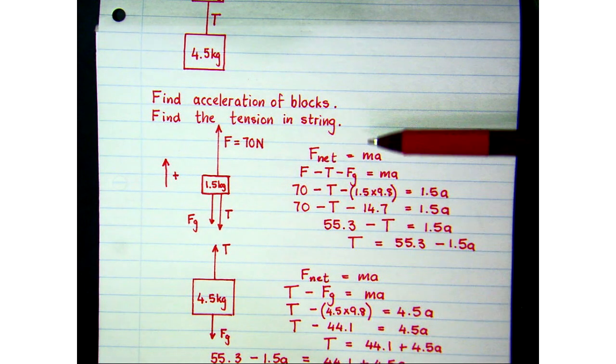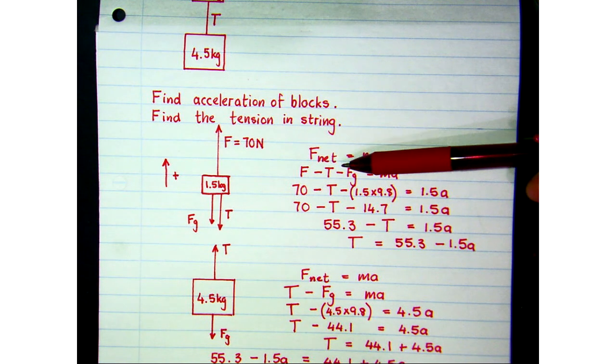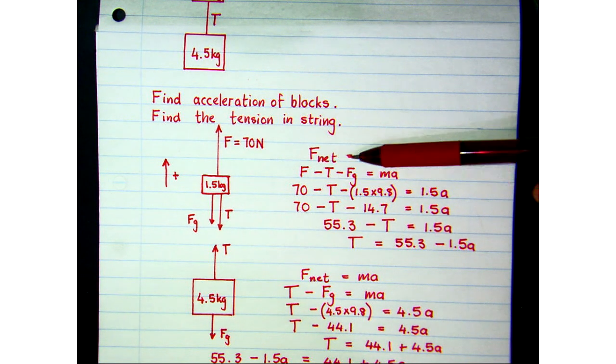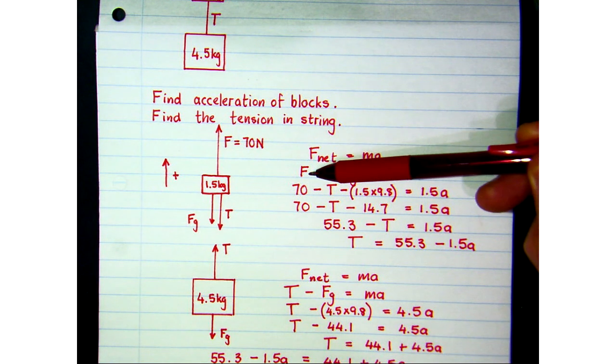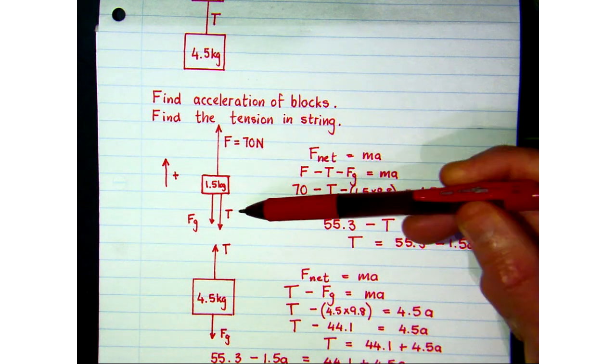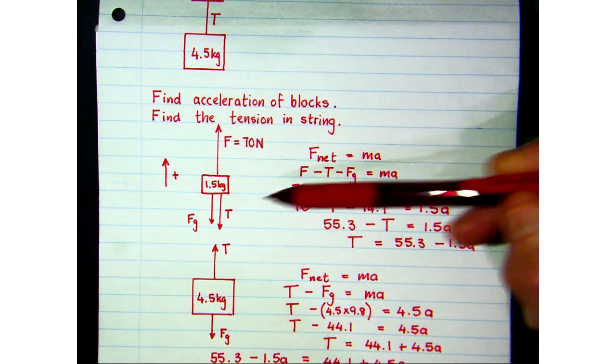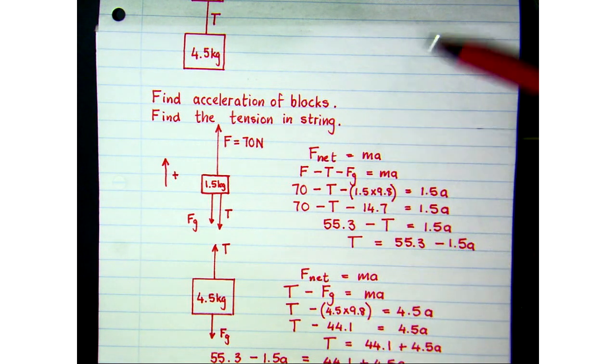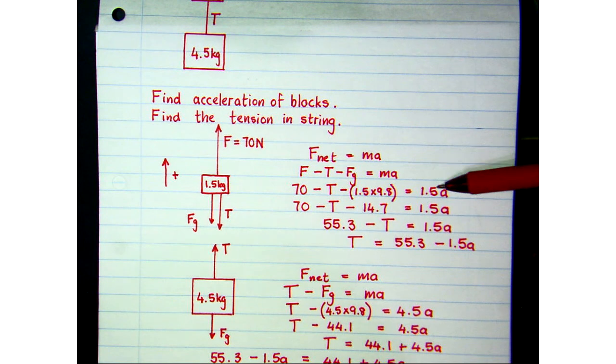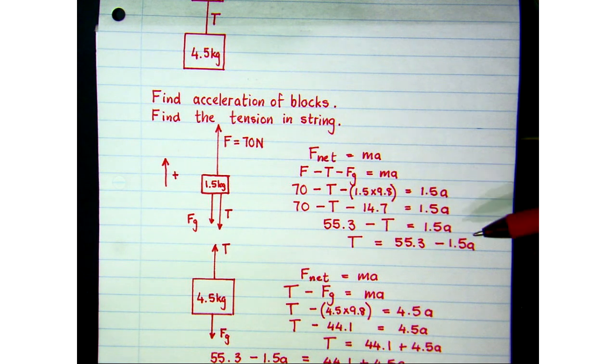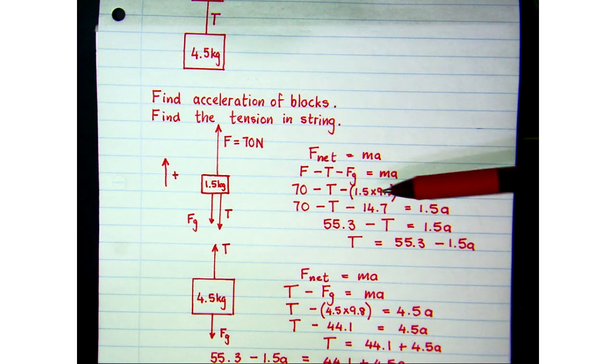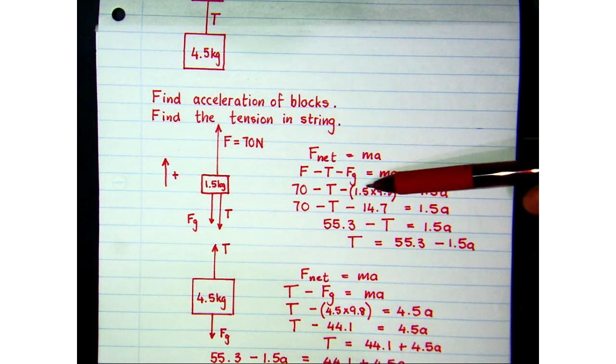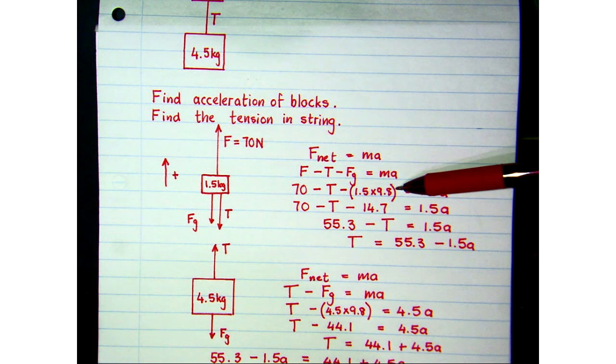So if we apply Newton's second law to the 1.5 kg block, the net force on the left hand side is the upward force F minus tension down minus the gravitational force that acts on that block, and that's equal to its mass 1.5 times its acceleration. We know the upward force to be 70. We don't know T and we know the weight. We can calculate the weight of that 1.5 kg block.